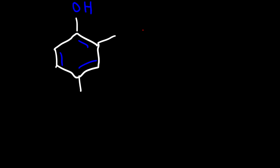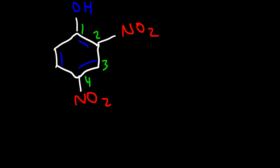Now let's move on to naming trisubstituted benzene derivatives. For this molecule, the parent name is phenol — the benzene ring with the OH group. It doesn't make sense to use nitrobenzene as the parent name, especially when there are two nitro groups. Counting clockwise to get the lowest numbers, this is called 2,4-dinitrophenol, with two nitro groups on carbons 2 and 4.